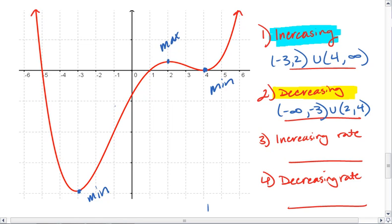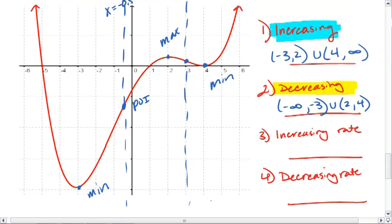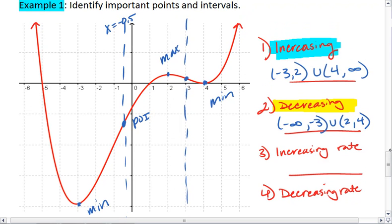The points of inflection will occur in between my max and min points. So I have one at about x equals negative 0.5, I have another one at about x equals 3, and that looks to be it.